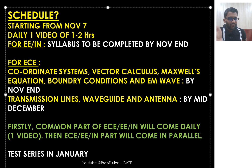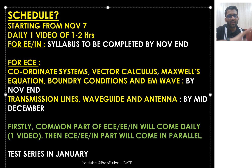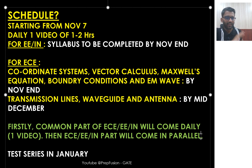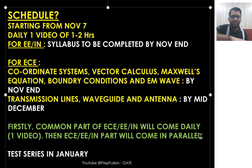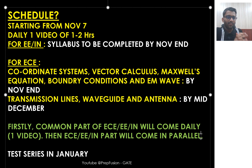For Electrical and Instrumentation, the syllabus will be completed by November. For EC, the coordinate system, vector calculus, Maxwell equations, boundary conditions, and EM wave part will be completed by November, and transmission line, waveguide, and antenna will be completed by mid-December or 20th December. The common part videos come daily at around 2 hours, then the EC and Electrical/Instrumentation parts come in parallel. Test series will be coming in January. Daily, 1.5 to 2 hours of content will come.